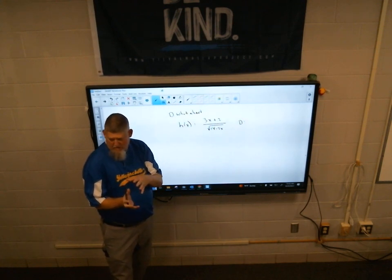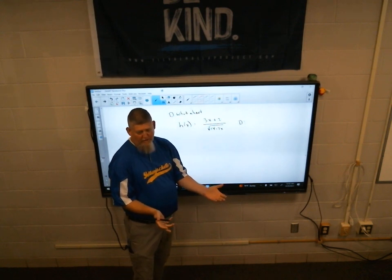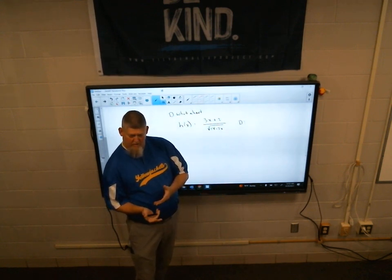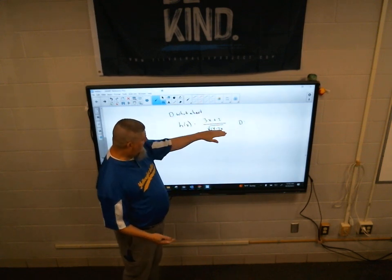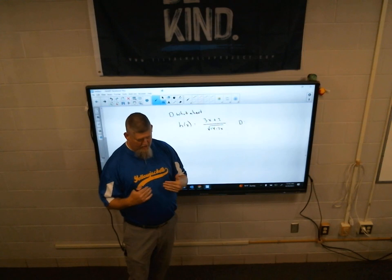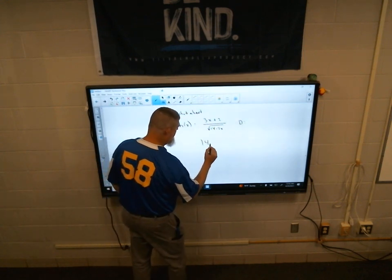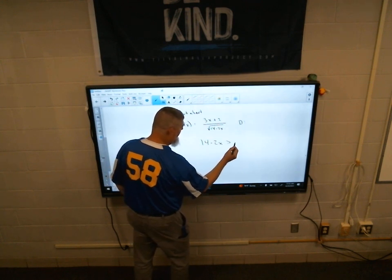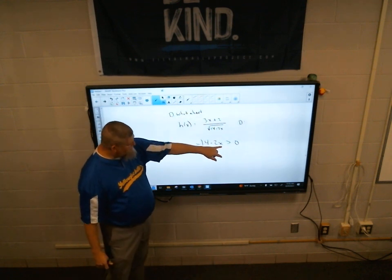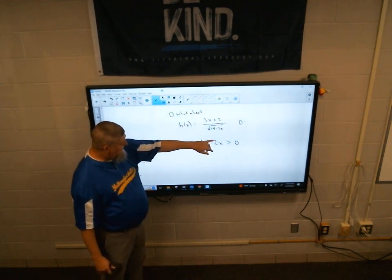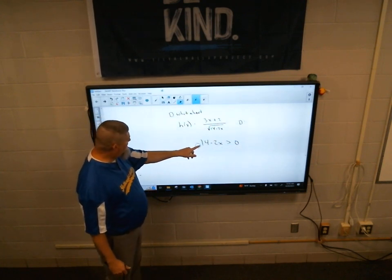So which rule do I follow? Do I follow the square root, where it has to be greater than or equal to zero, or do I follow the rational? Well, the correct answer here is you follow both. The denominator cannot be zero. And 14 minus 2x has to be greater than zero.